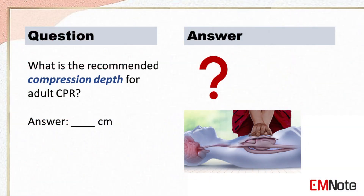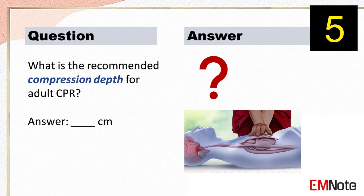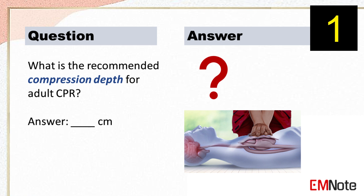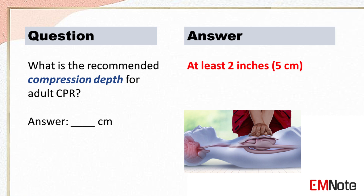What is the recommended compression depth for adult CPR? The recommended compression depth for adult CPR is at least 2 inches or 5 centimeters.